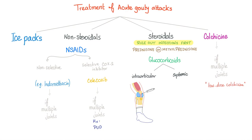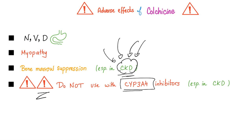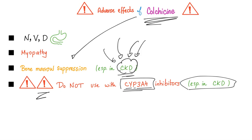High-dose colchicine and intravenous colchicine are no longer recommended. Colchicine can be really toxic. Adverse effects include nausea, vomiting, myopathy, and bone marrow suppression, especially in chronic kidney disease. Do not use colchicine with drugs that inhibit cytochrome P450 3A4, especially in chronic kidney disease, because this will increase the toxicity of colchicine and can lead to neutropenia and infections.